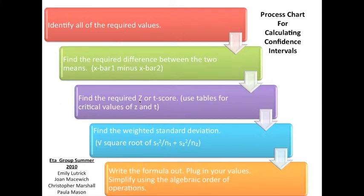Remember, z-score is used when both groups have 30 or more. A t-score is used if either group has less than 30. And if you use a t-score, you have the confidence level, but the degree of freedom is given by the formula n minus 2.